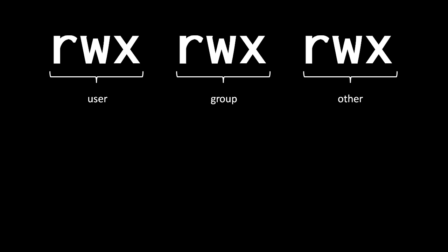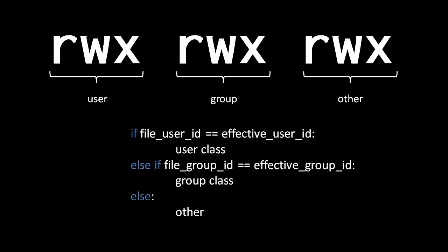Associated with each file and directory are nine different permissions, grouped into three classes: user, group, and other. For each class there is a read permission, a write permission, and an execute permission — R, W, and X. Each permission is either on or off. Which class of permissions applies to a process is determined by a simple rule: if the user ID of the file matches the effective user ID of the process, the user class applies; if the group ID matches the effective group ID, the group class applies; otherwise, the other class applies.